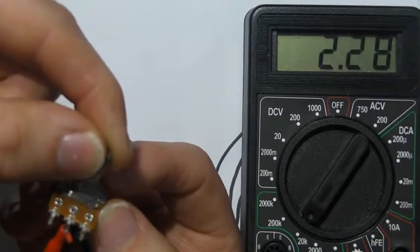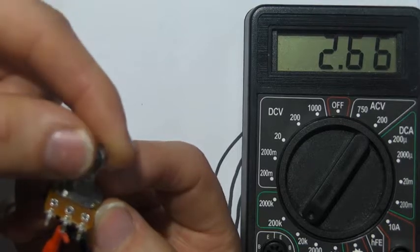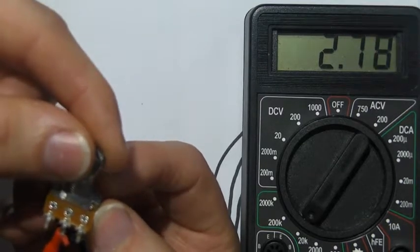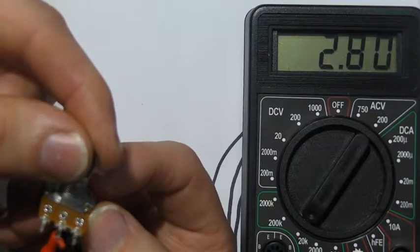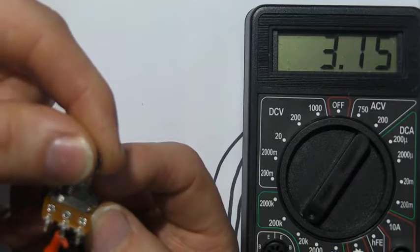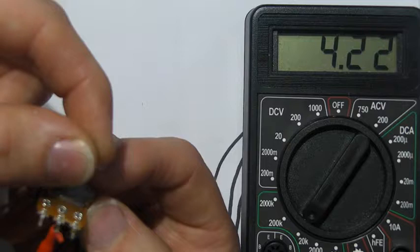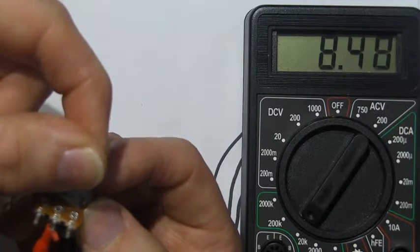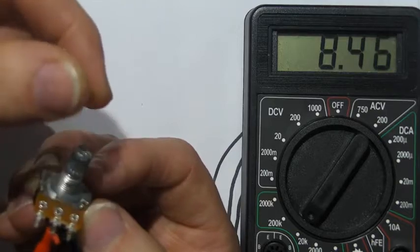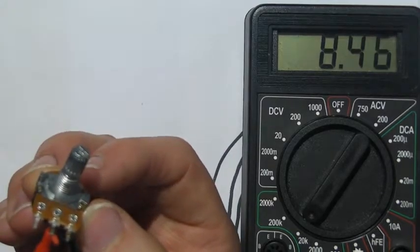You can see that as I turn it slowly the resistance is increasing. Now this is my multimeter is showing this in kilo ohms. So at the moment we're at 2.8 kilo ohms and we can keep going up until the highest resistance we can reach on this potentiometer which happens to be about eight and a half kilo ohms or 8.5 kilo ohms.